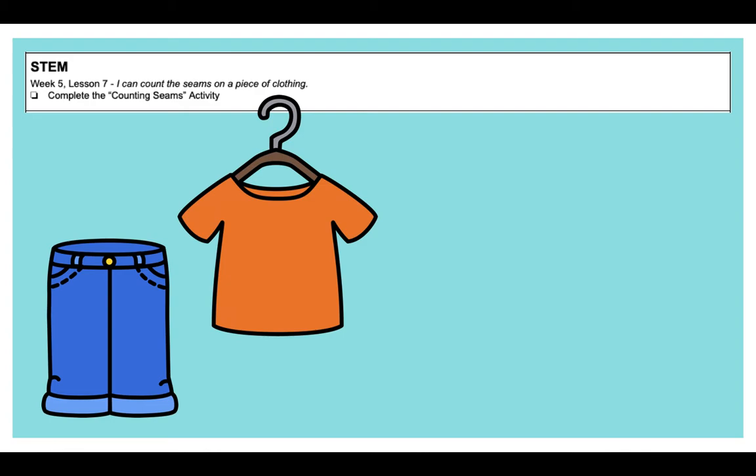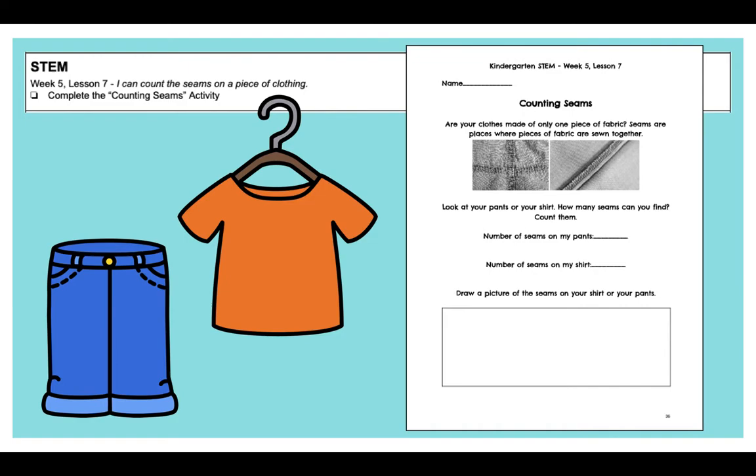We are going to be talking more about fabric. You guys have been doing lots of research on fabric. This week, your prompt is, I can count the seams on a piece of clothing. Here's what your worksheet says. Are your clothes made of only one piece of fabric? Probably not. Seams are places where pieces of fabric are sewn together. So take a look at those two pictures. It'll show you where seams on your clothes are sewn together.